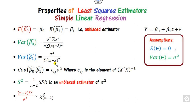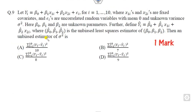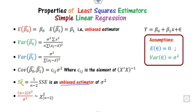If someone asks you to find the unbiased estimator of sigma square — as in question number 9 — you can simply use the formula: 1 upon (n minus 2) times SSE. Note that (n minus 2) times sigma-hat squared upon sigma square follows a chi-square distribution with degrees of freedom n minus 2.